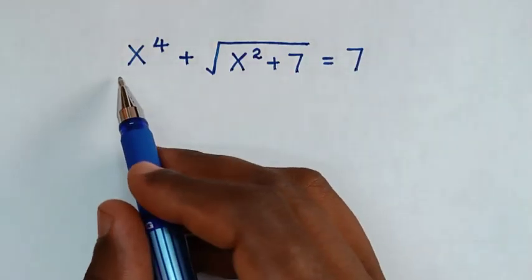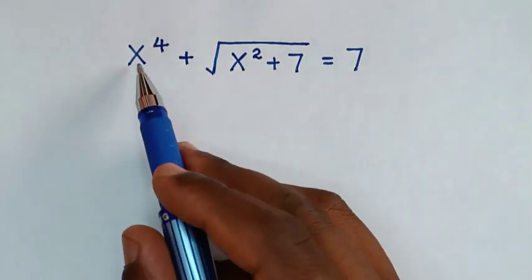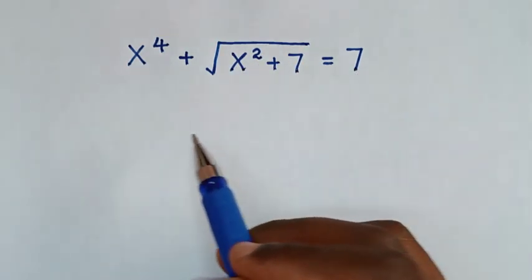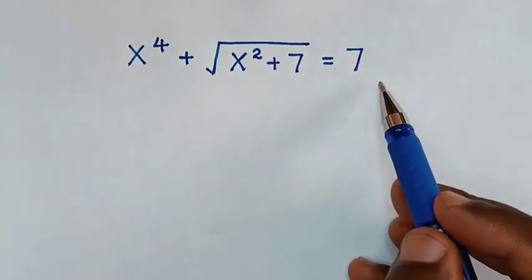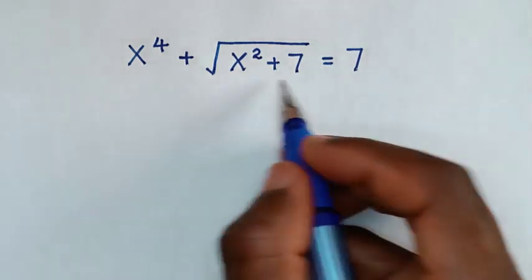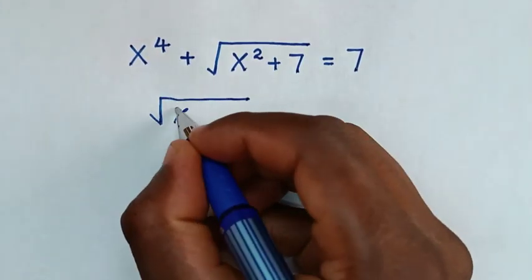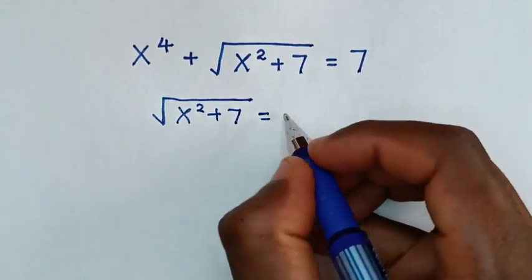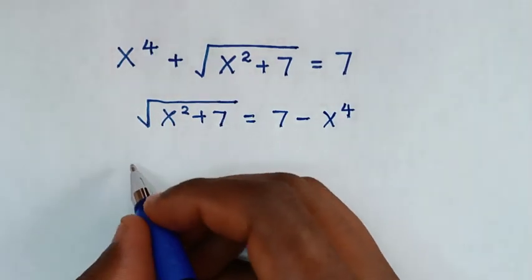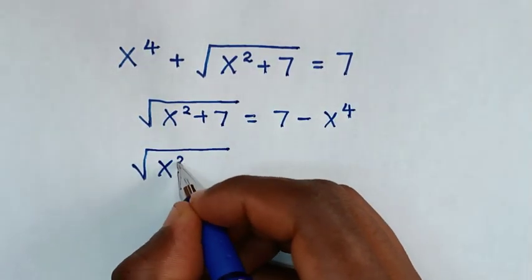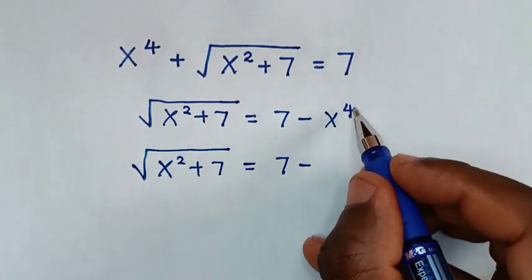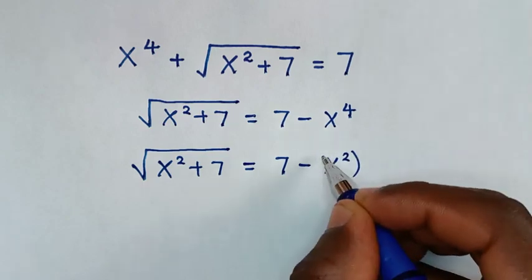Hello, you are welcome to solve this math problem: x to the power 4 plus square root of x squared plus 7 is equal to 7, to find the values of x from this equation. In the first step we will take x to the power 4 to the right side, so it will be square root of x squared plus 7 is equal to 7 minus x to the power 4. Then squaring both sides: square root of x squared plus 7 equals (7 minus x squared) squared.